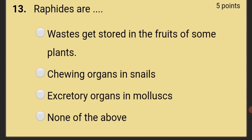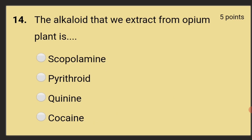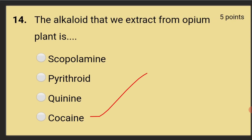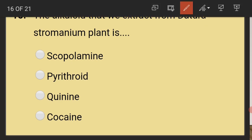Raphides are waste products that get stored in the fruits of some plants. The alkaloid extracted from the opium plant is cocaine. The alkaloid extracted from Datura stramonium is scopolamine.